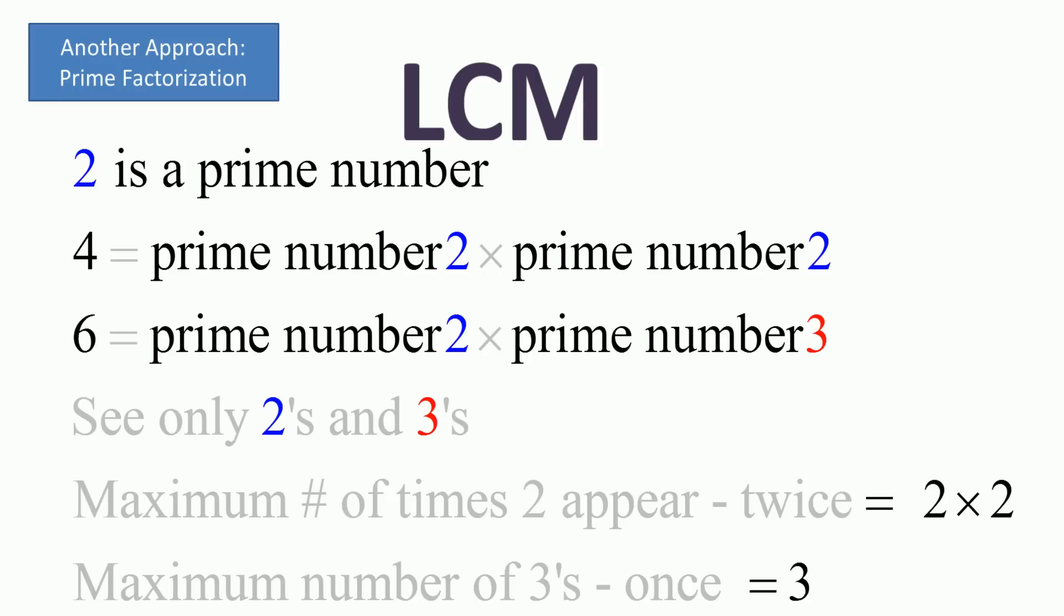2 is already a prime number. 4: how do we break down 4? It's 2 times 2. How do we break down 6? It is 2 times 3. What are the kinds of numbers that we see? We see 2s and 3s only.